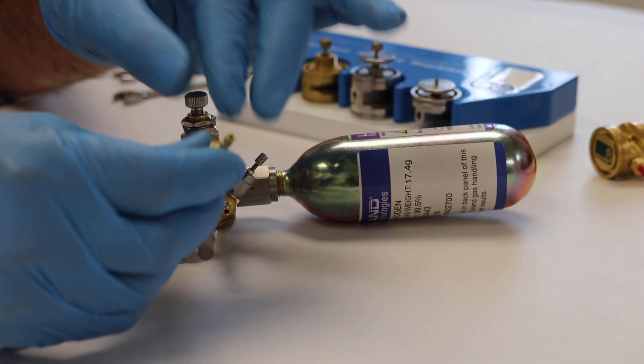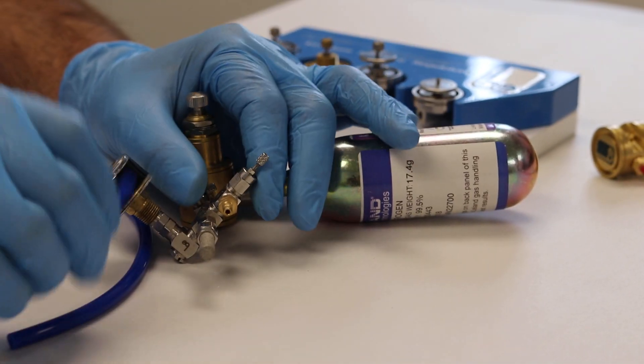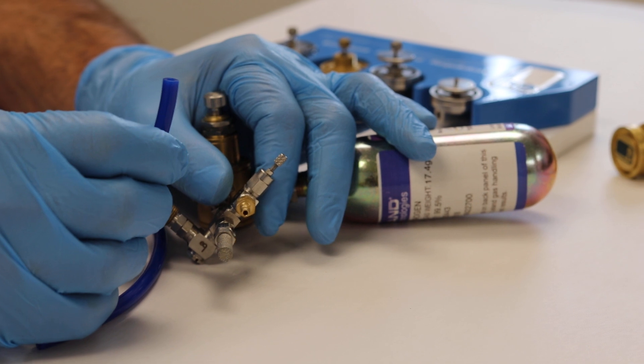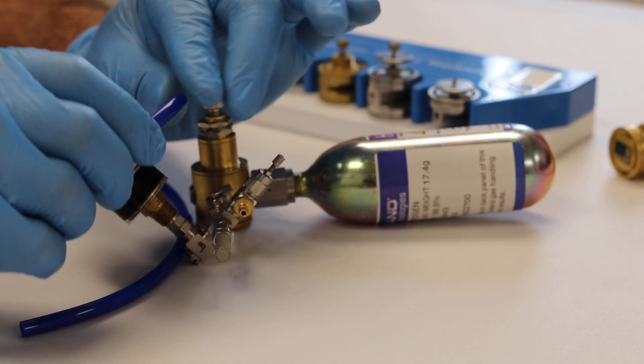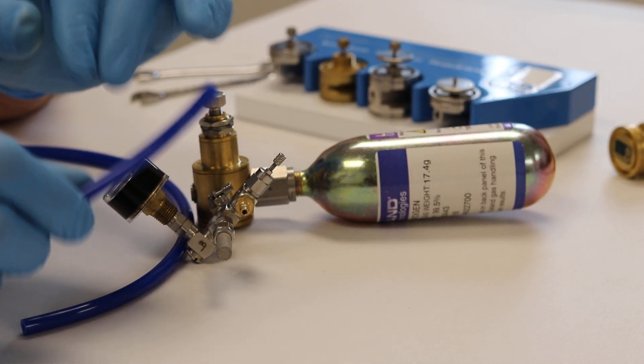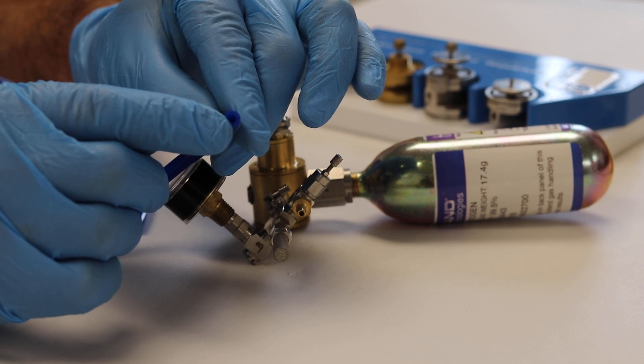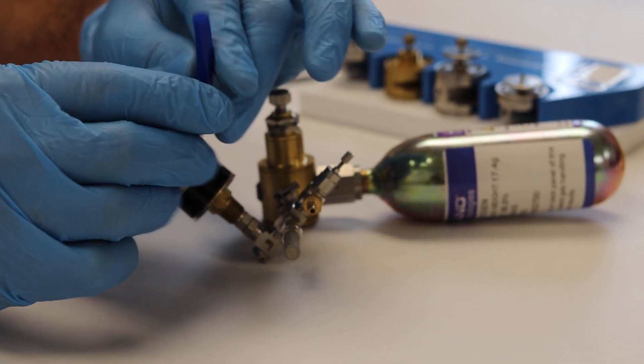Here we have a barb-style fitting. The first thing you need to know is the inside diameter of your tubing. Commonly, tubing is specified by the outside diameter, but the important feature when you're using a barb-style fitting is the inside diameter of the tubing.